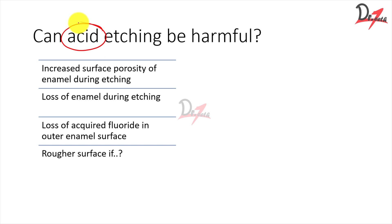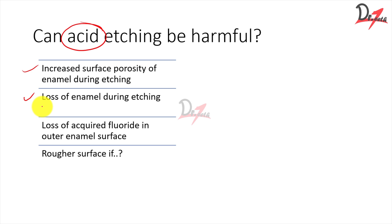Since an acid is involved in the acid etching procedure, can it be harmful? Yes — there can be various iatrogenic effects. There could be increased surface porosity of the enamel during etching, loss of enamel during etching — more than required — loss of fluoride in the outer surface of the enamel, and a rougher surface if we over-etch.